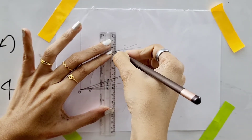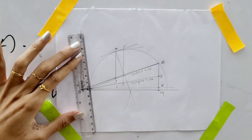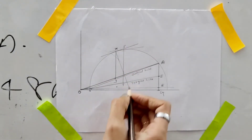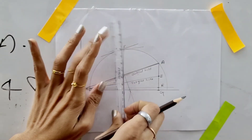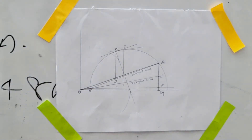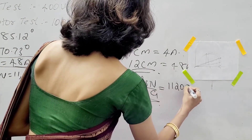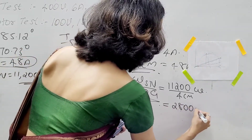We are going to find the maximum output. The power scale is WSN divided by AG length, where WSN is 11,200 and AG is 4 cm. The power scale equals 2,800 watt per centimeter.